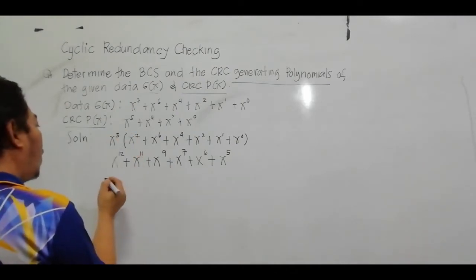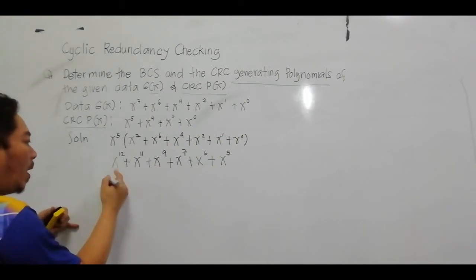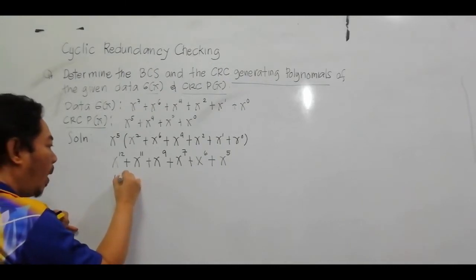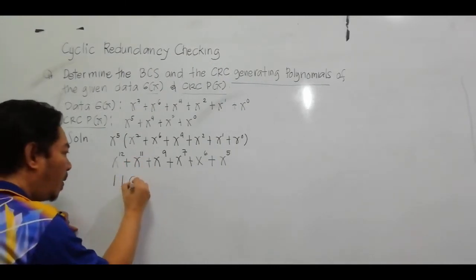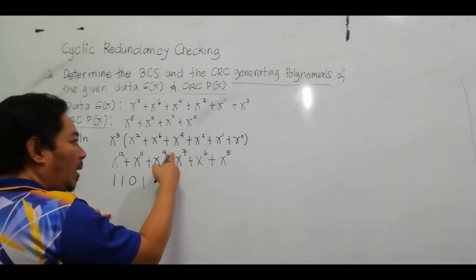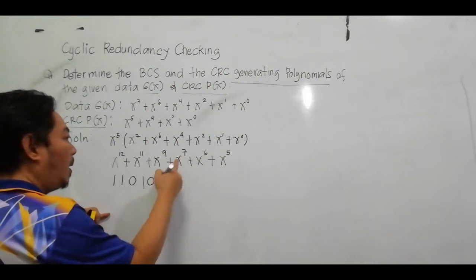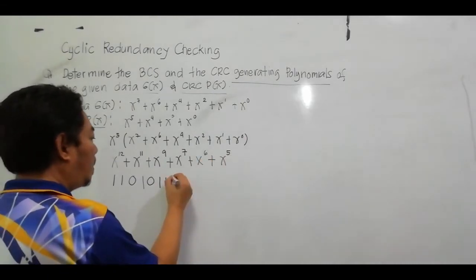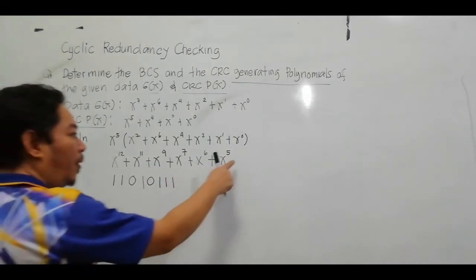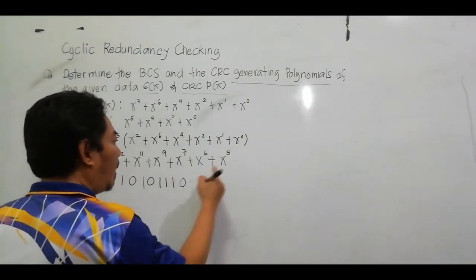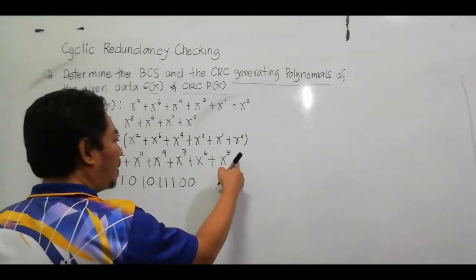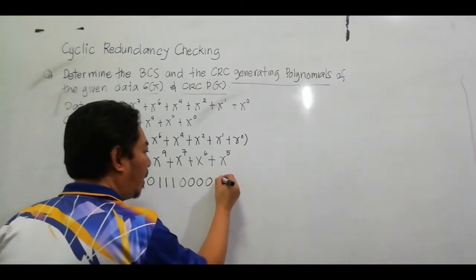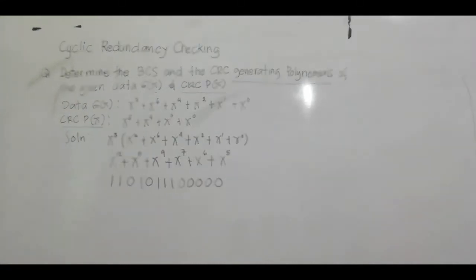So our data stream now in binary is: X^12 = 1, X^11 = 1, X^10 = 0, X^9 = 1, X^8 = 0, X^7 = 1, X^6 = 1, X^5 = 1, X^4 = 0, X^3 = 0, X^2 = 0, X^1 = 0, X^0 = 0. The next step is to divide.